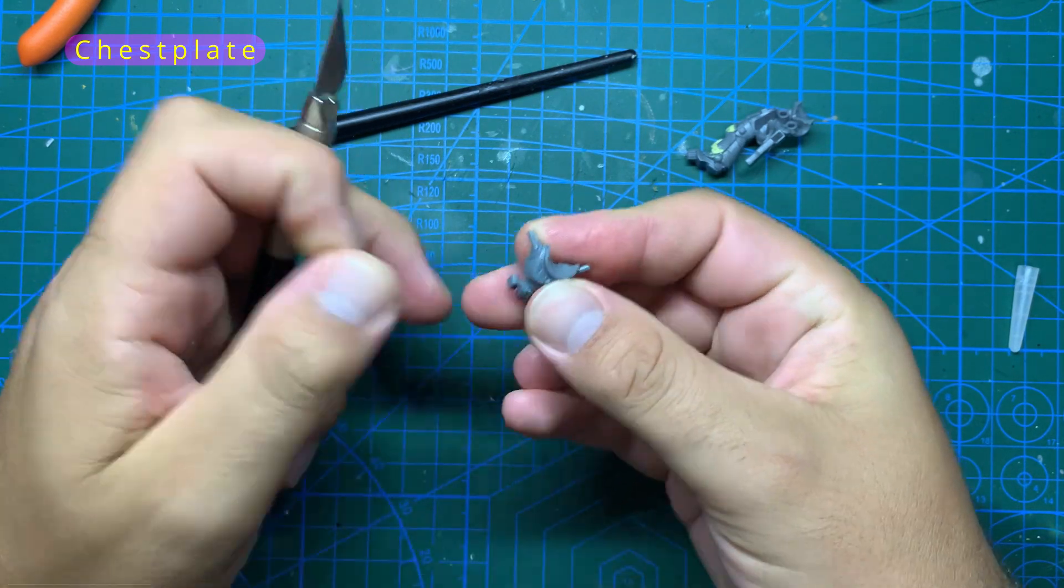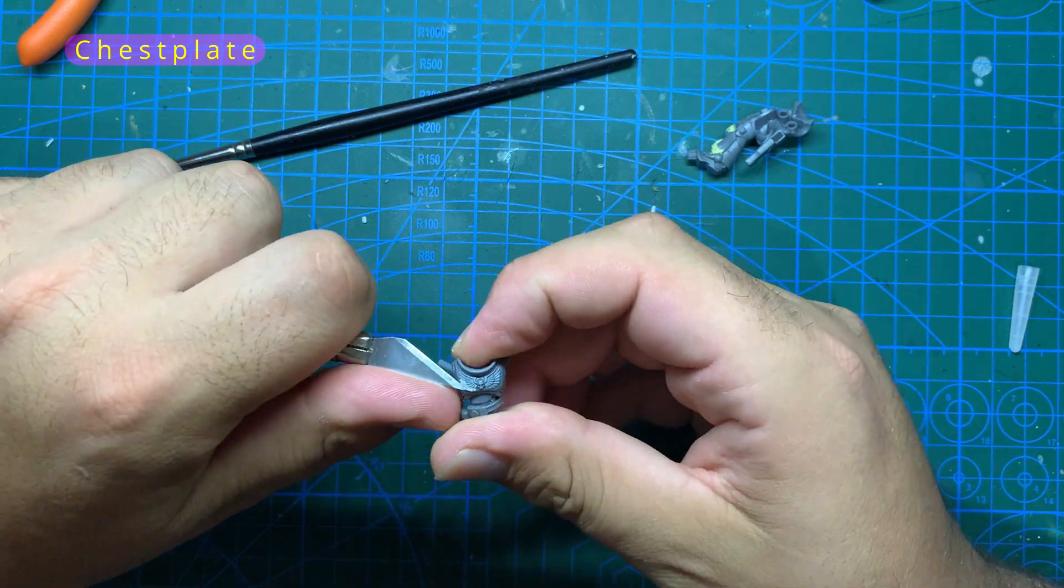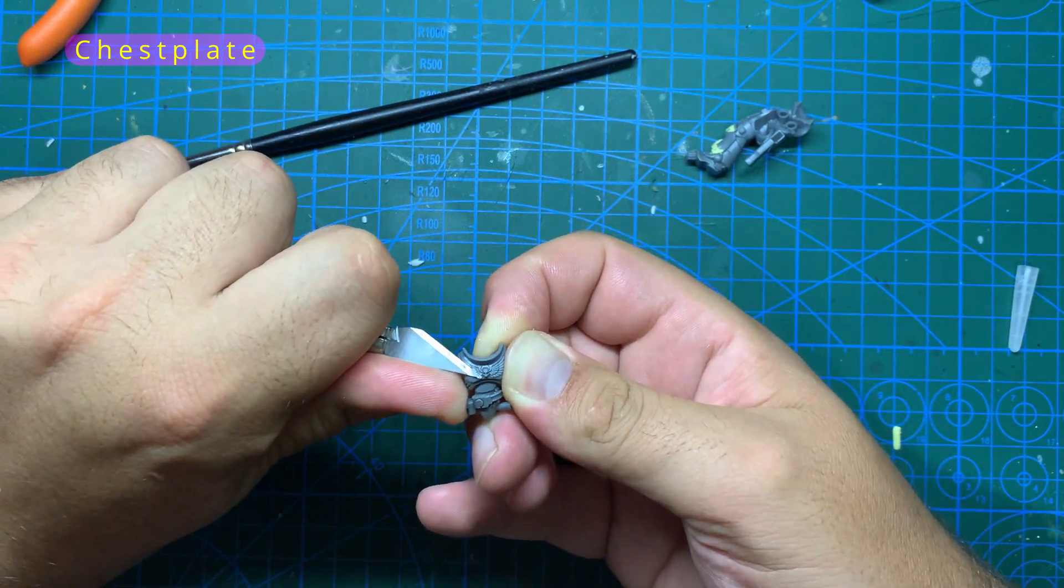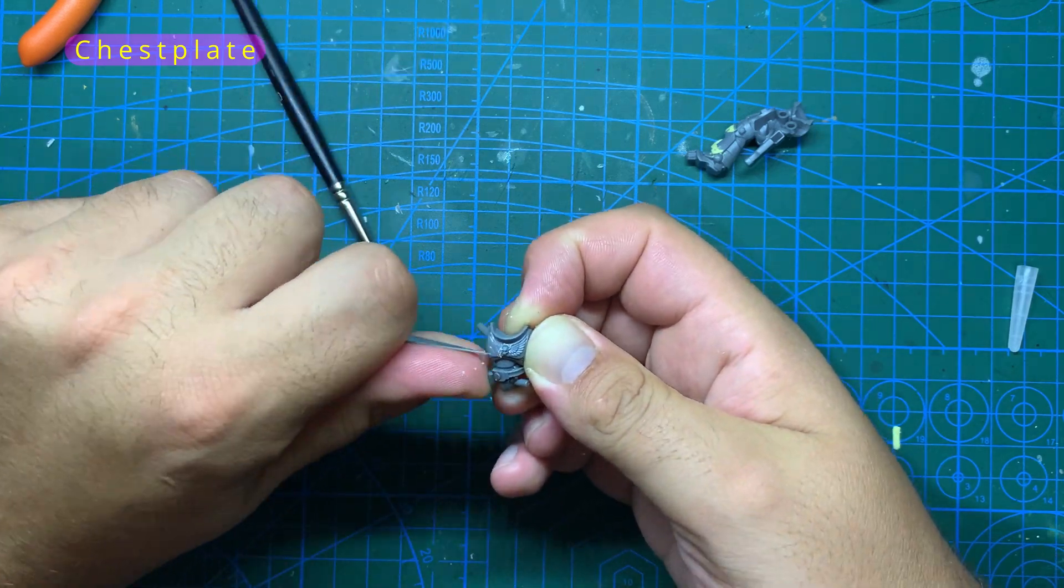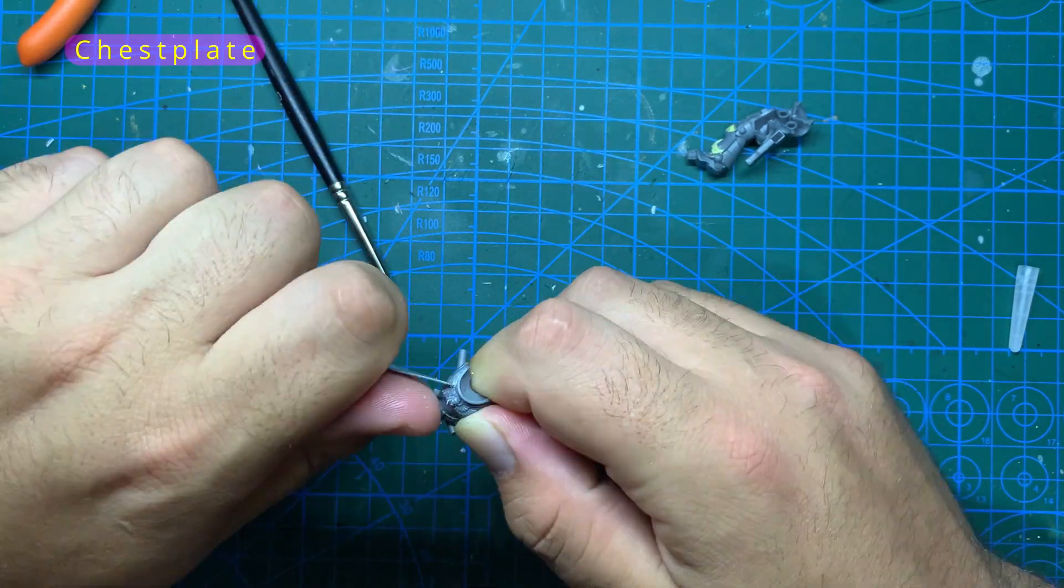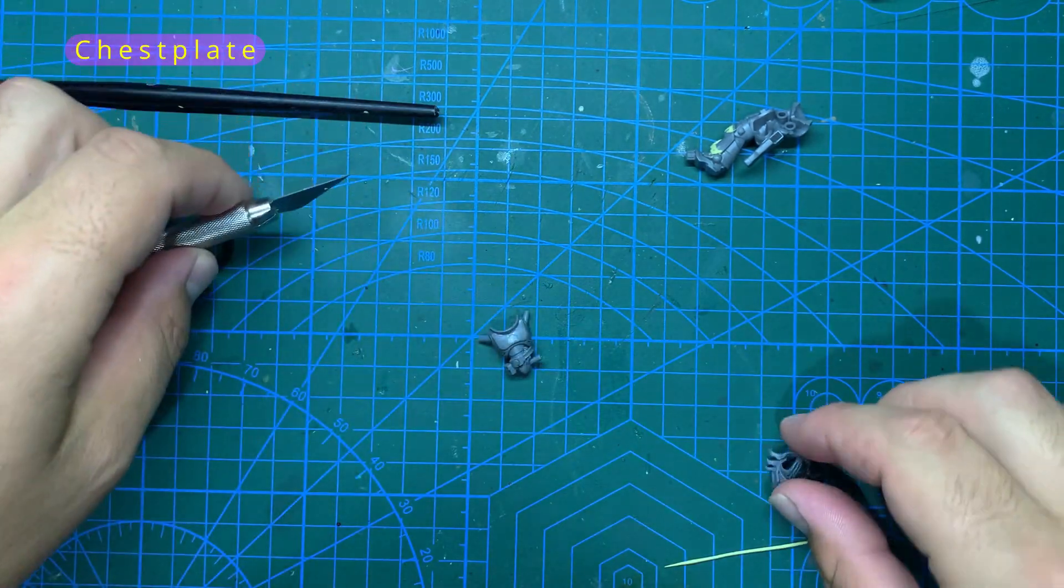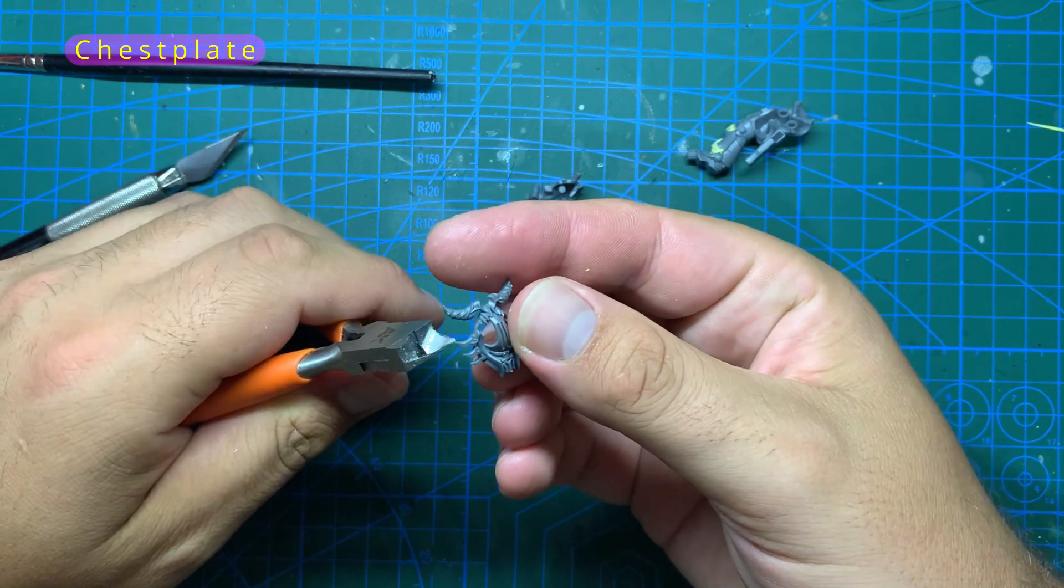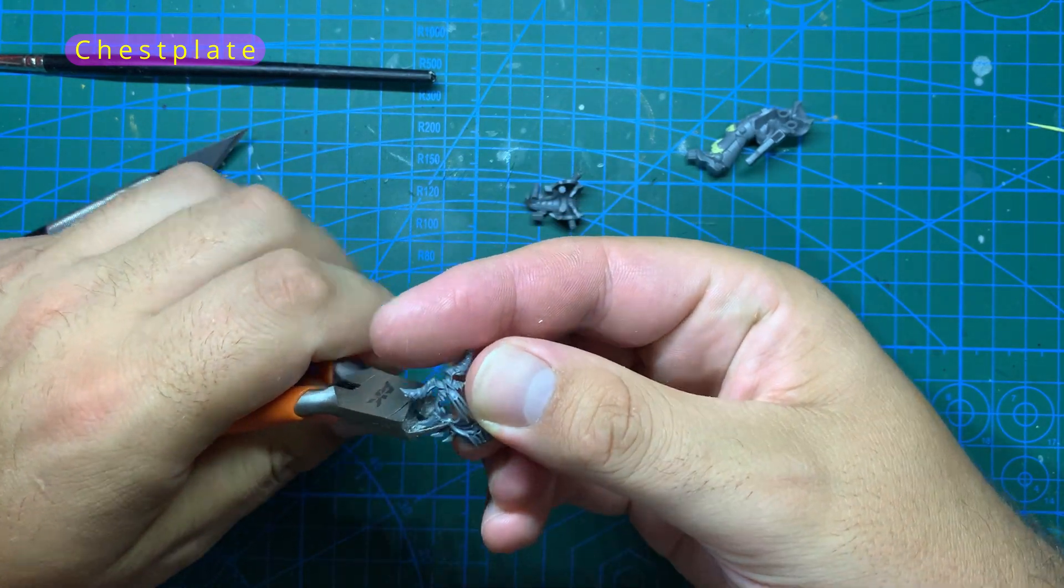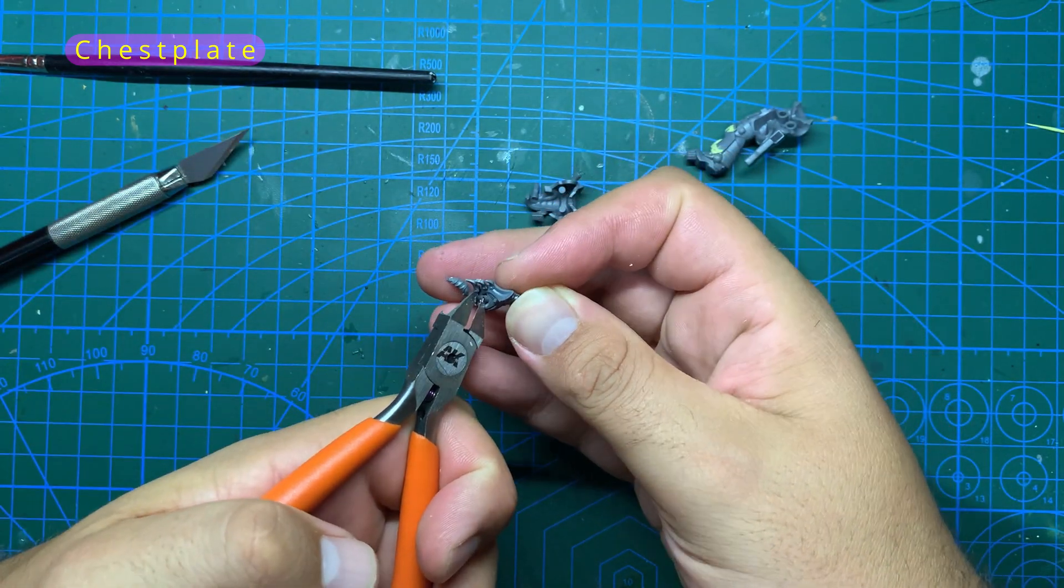For the chest piece I will start by removing the aquila with my knife, carefully cutting it a little at a time until the chest is flat, and then using a scraping motion to smooth it out. Now using some putty you could add some trim and spiky bits like we did with the legs, but I am going to have this guy be a squad leader. So I'm going to grab this chest piece here from the Corpse Grinder Cult Necromunda Gang. For this to fit there will however need to be some adjustments to both this part and the chest plate.